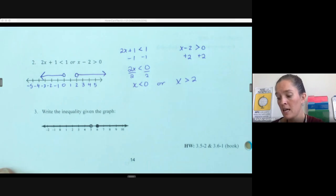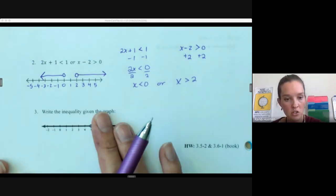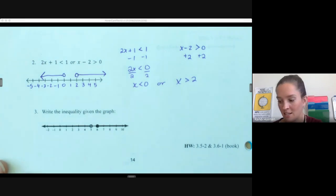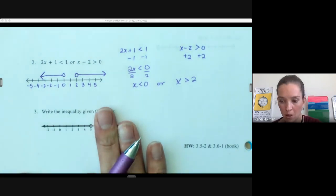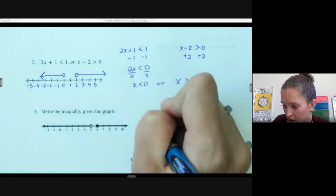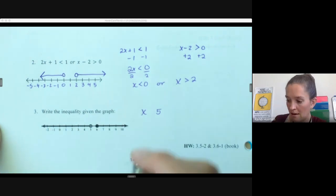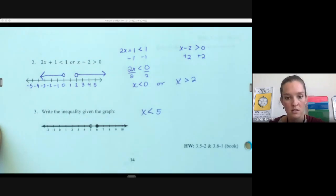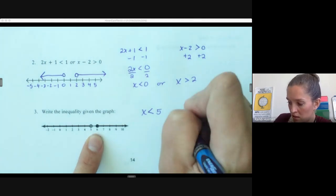Okay, last thing we're going to look at today is writing an inequality from the graph. So we're just going to look at each part of the graph and write a separate inequality. So if we just look at this part here, our border place is 5. So x is going to relate to 5 in some way. It's not equal to because it's an open circle. And where all of these numbers left are smaller, so x is less than 5. Covered this half of the graph.